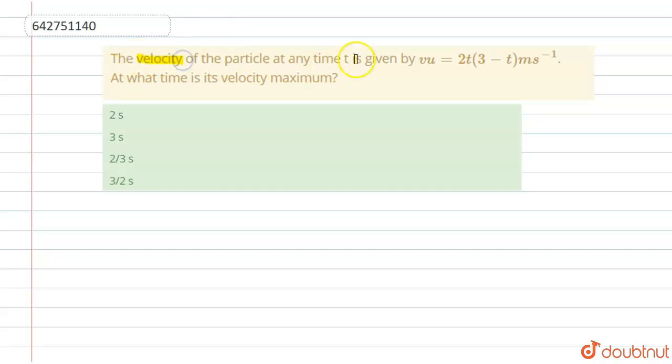The velocity of a particle at any time t is given by v equals 2t(3 - t) meters per second. At what time is its velocity maximum? So in this question we have to find the time when the velocity is maximum.